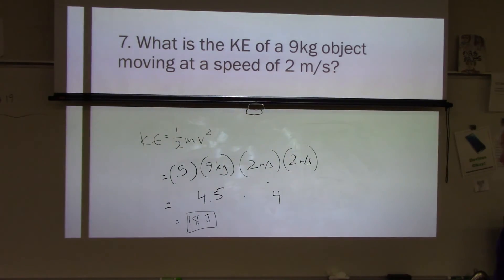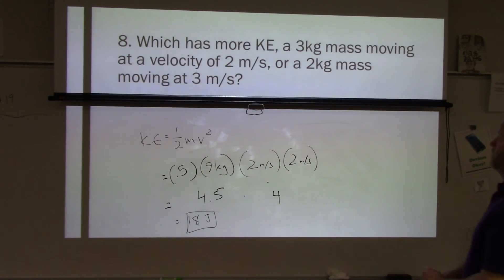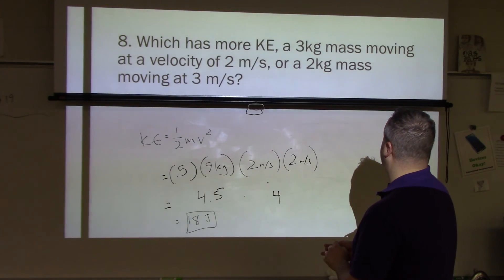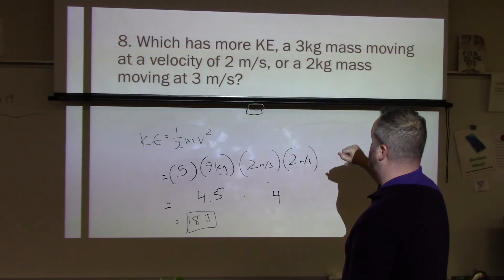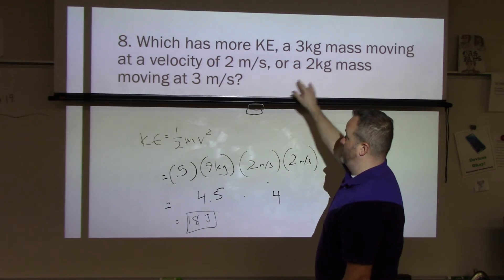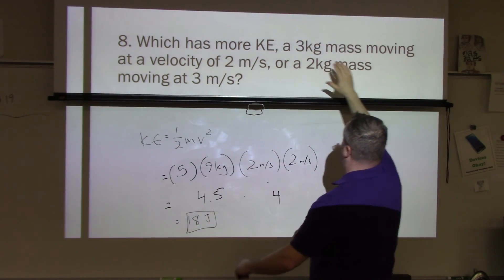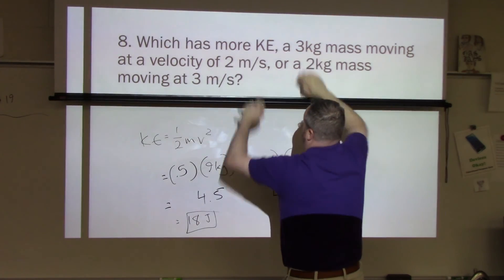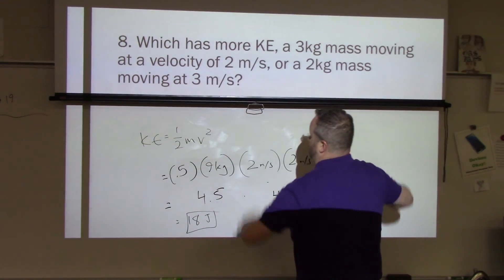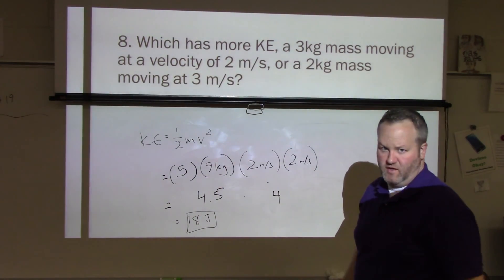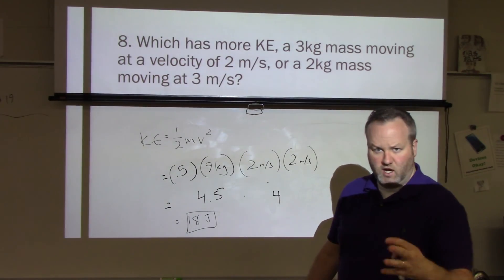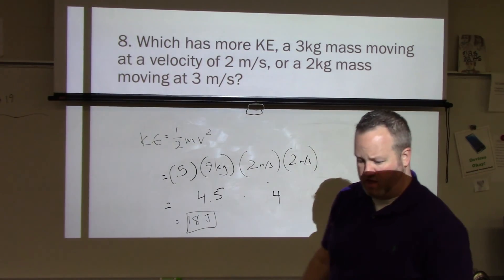Let's try one more. Which has more kinetic energy? A 3 kilogram mass moving at a velocity of 2 meters per second. Or a 2 kilogram mass moving at 3 meters per second. To solve this, what I want you to do is find the kinetic energy of this. And then find the kinetic energy of this. And compare the two together. And we will check our answer in part 2. Thank you.